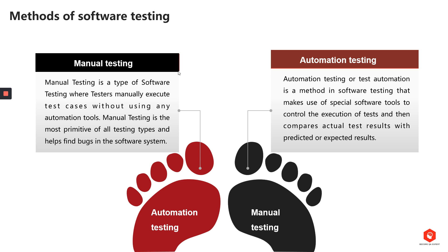Methods of software testing: there are two methods, manual and automation testing. Manual testing is a type of software testing where testers manually execute test cases without using any automation tool. Manual testing is the most primitive of all testing types and helps find bugs in the software system. Still, testers need to know all kinds of hacks and have skills like logical thinking, connecting concepts, breaking down the big picture into smaller parts, and investigating.